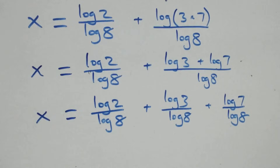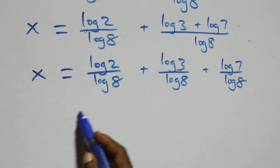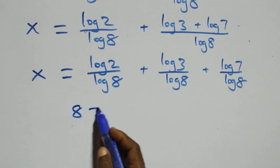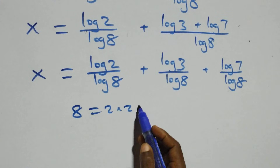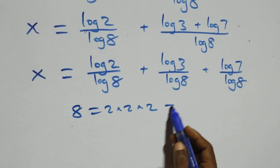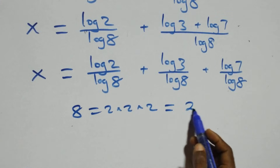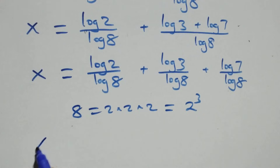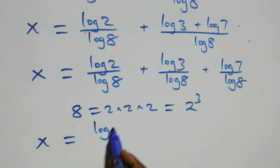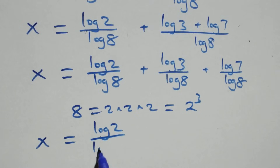From here, 8 can be written as 2 times 2 times 2, which is the same thing as 2 raised to power 3. So what we have becomes x equals to log 2 over log of 2 raised to power 3.